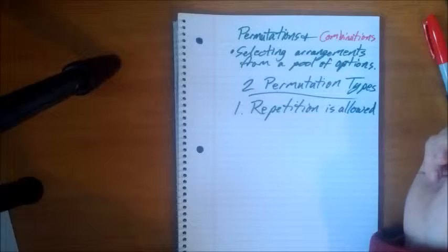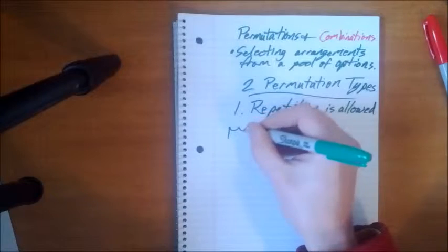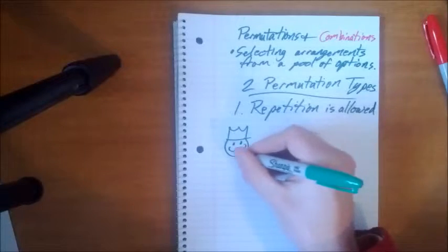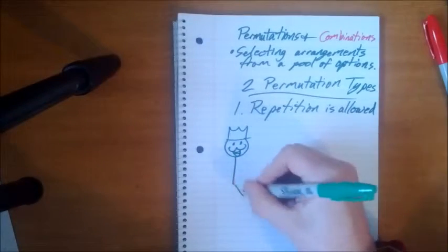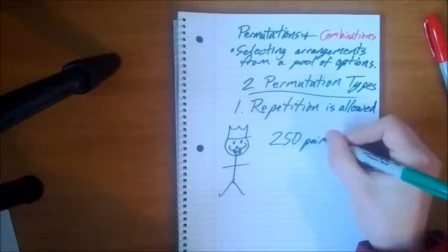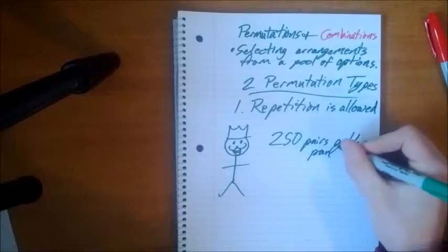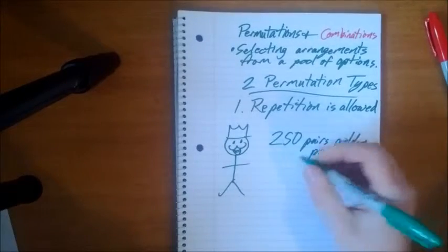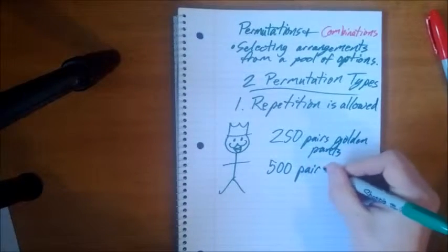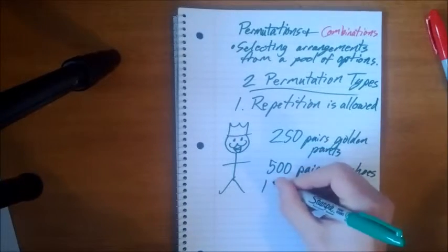So for example, we have King Rich Pants. So give him a crown. He has a cool mustache. King Rich Pants has 250 pairs of golden pants. Thus the name King Rich Pants. He was known throughout the world for his amazing golden pants. He had 500 pairs of shoes and 1,000 shirts.